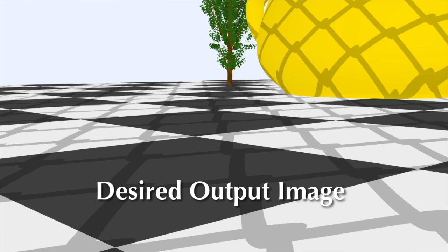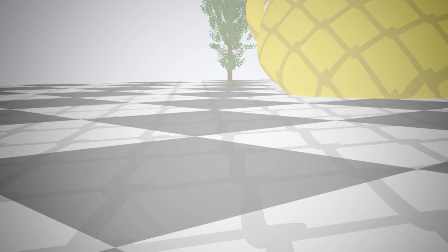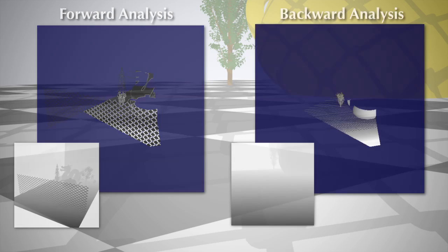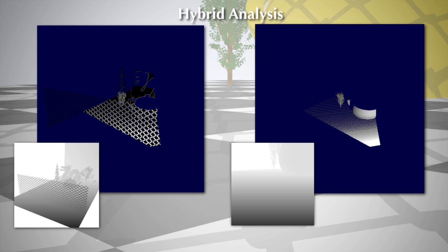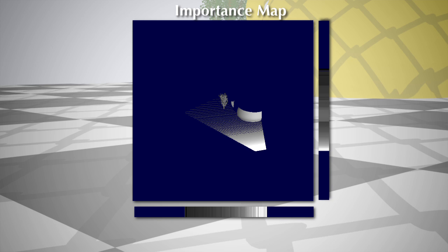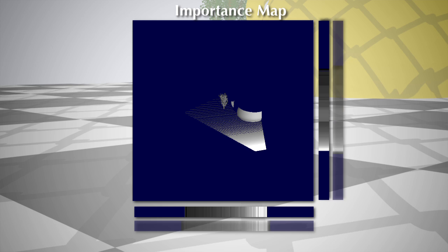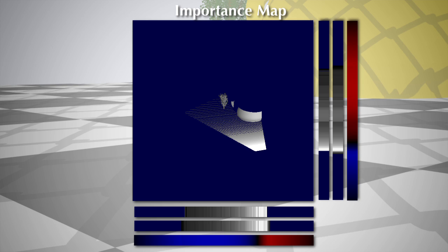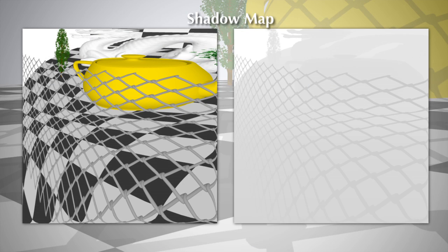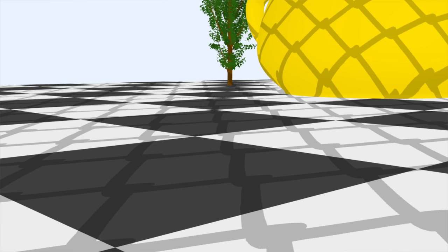The first step of shadow map construction involves importance analysis. This process proceeds in one of three ways: either a conventional shadow map is rendered and analyzed, the output view is rendered and analyzed, or a hybrid of both. The analysis produces an importance map based on any number of analytic or heuristic-based importance functions. The rows and columns of the importance map are collapsed, blurred, and a warping map is calculated. The warping map is then used to render a shadow map, which is used for calculating the shadows in the final output image.